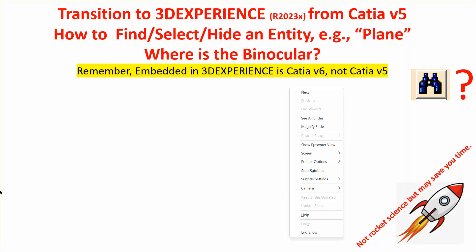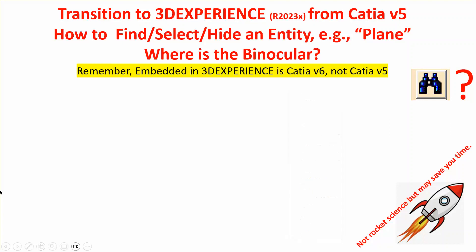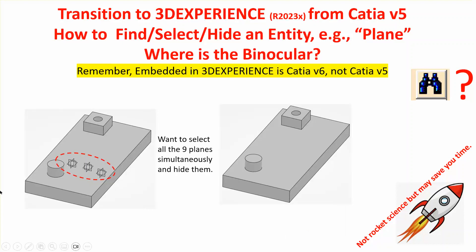The reason I made this video is that there are many problems where you have an assembly with several parts, and each part has its own X, Y, Z planes, and you want to turn those planes off. In CATIA V5, it's really simple — there's something called Search, you find it using binoculars, select all the planes, hide them simultaneously, and you're done.